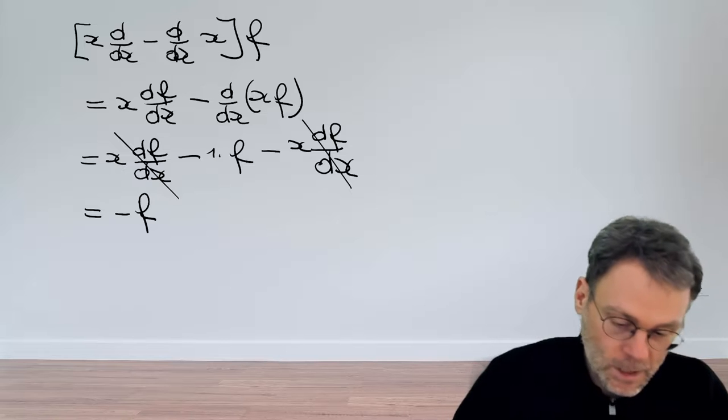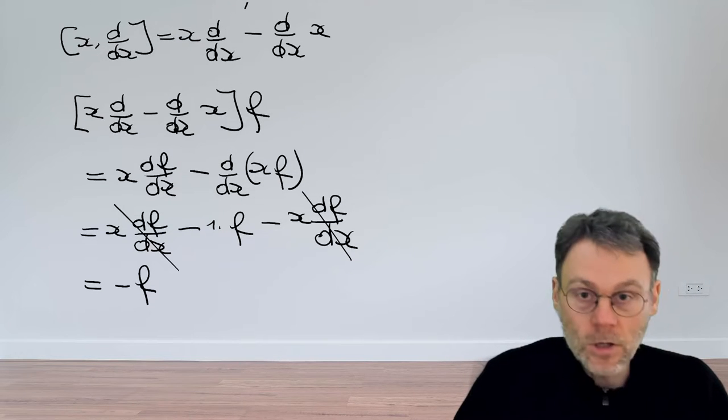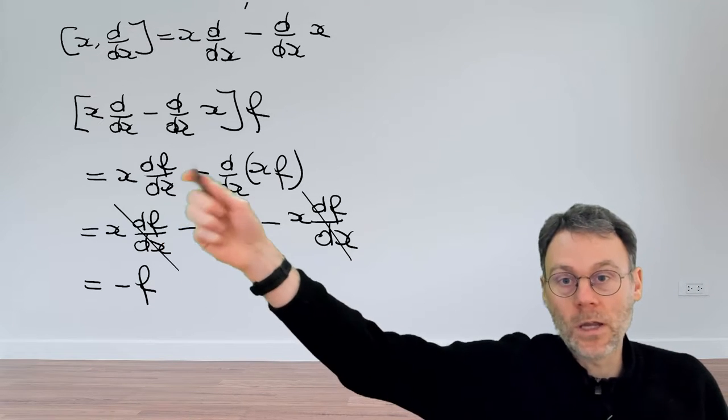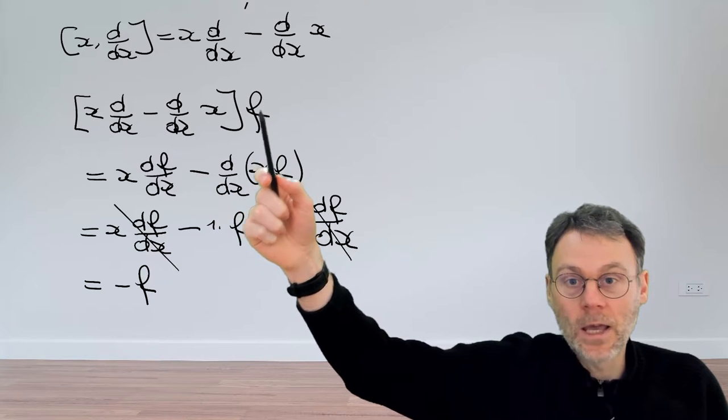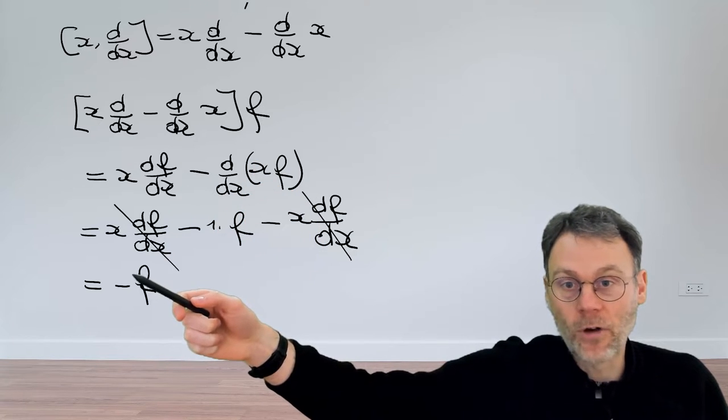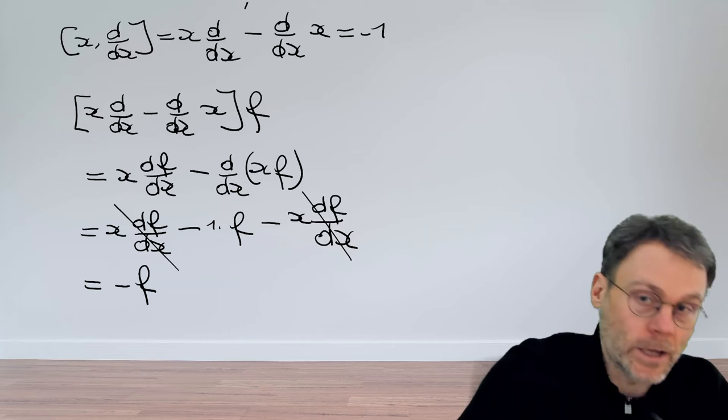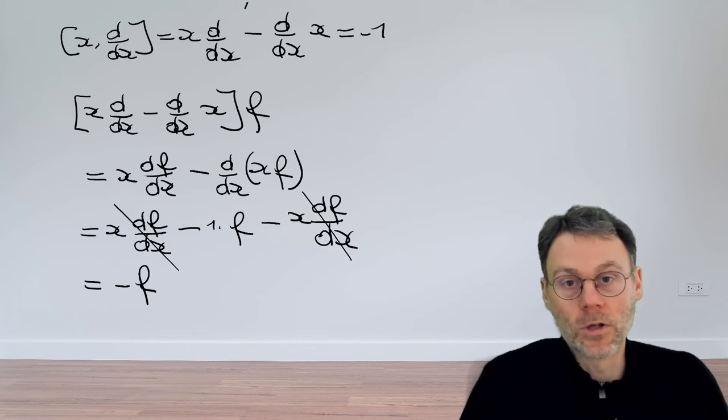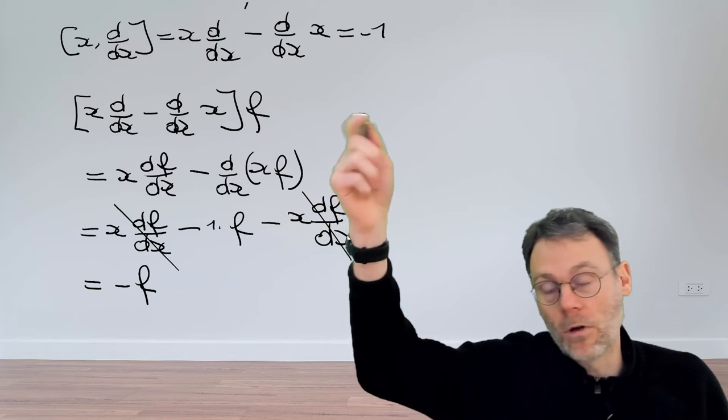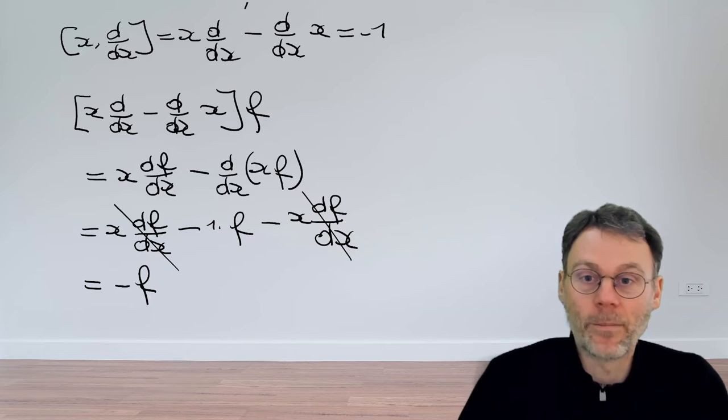The end result is that we have minus f. So if we have this commutator operating upon a function, the result is the same function multiplied by minus one. This is why we can write that our commutator is minus one. The result of operating with that commutator on whatever you want is just flipping its sign.